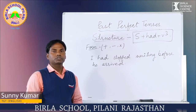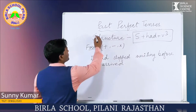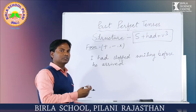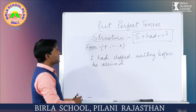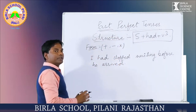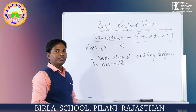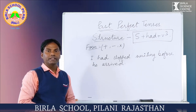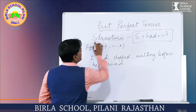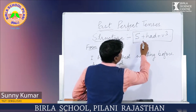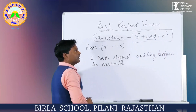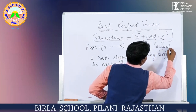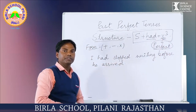Hello students, let's study past perfect tenses. As you already know from previous videos on tenses, it talks about work which was in the past and got completed there. It has a definite structure. The structure of the past perfect tense is: subject + had + third form of the verb. This third form is always called the perfect form, so whenever we talk about perfect tenses, we use the third form of the verb.